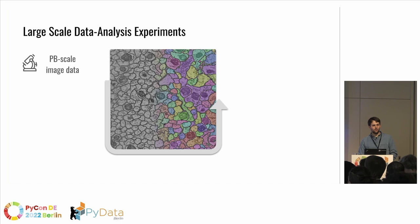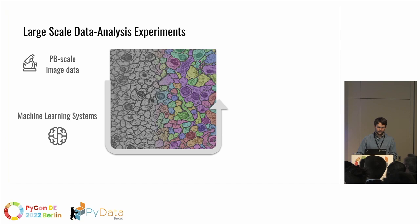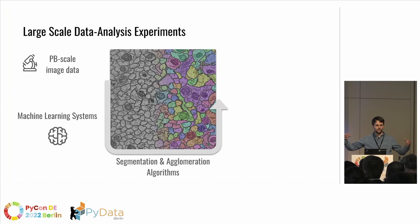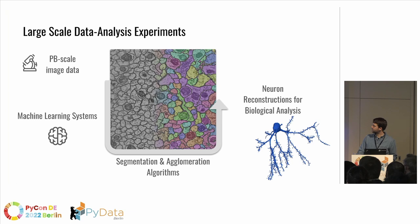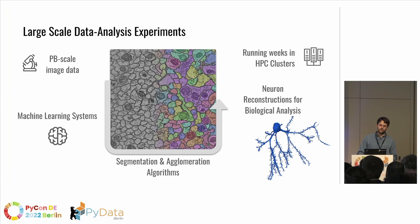When we do data analysis on those datasets, we're speaking about petabyte-scale image data with nanometer-resolution, so there's quite a lot of data. We have machine learning systems we train on this data, and some post-processing steps — segmentation based on ML predictions and agglomeration to trace longer cells, especially because neurons have very thin processes. What we get out basically is neuron reconstructions — all cells in the volume, where they connect, where the interactions and synapses are — so biological researchers can do biological research, not boring data analysis. These experiments run for weeks or months in HPC clusters.